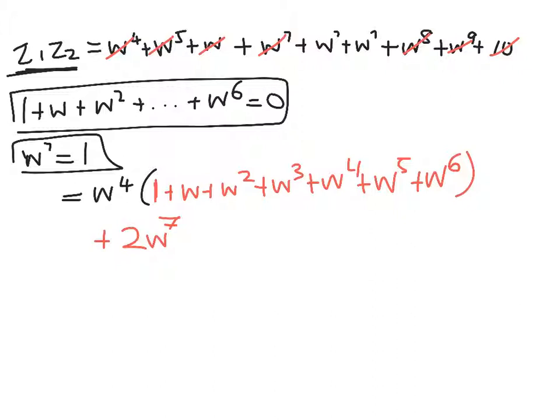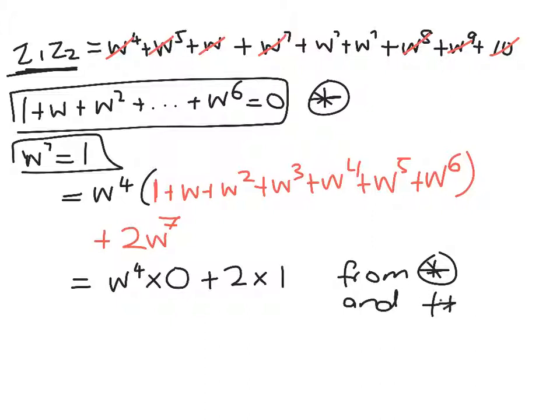Right, so there's that. And then what have I got left? I've got + 2w⁷. So that's all looking very good. So that is now equal to w⁴ times 0 + 2 times 1. So we'll call that one there star, and the second one here star star.